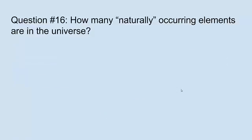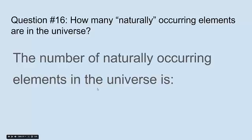Question number fifteen: How many naturally occurring elements are there in the universe? Well, I believe there's like 117 or 118 elements in the universe. However, some of them are made in labs. The number of naturally occurring elements in the universe is 92.